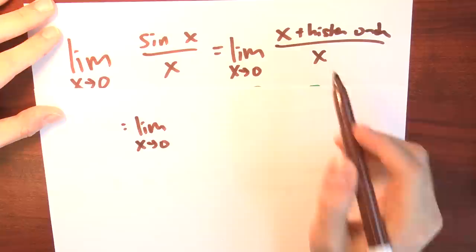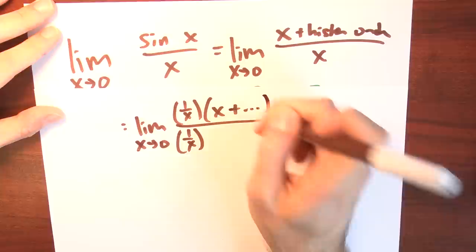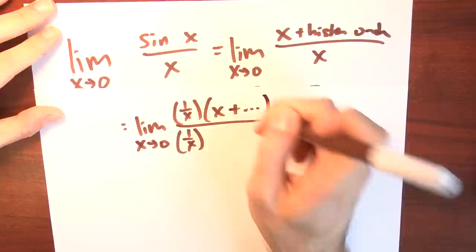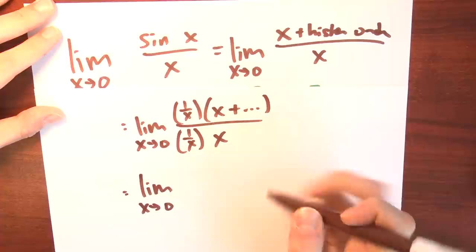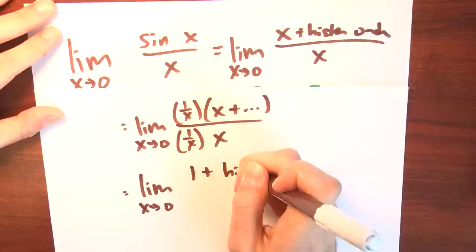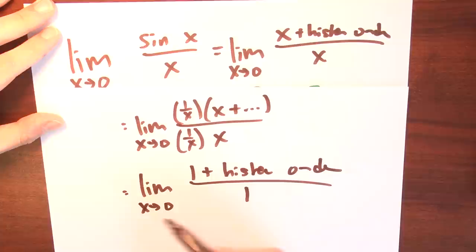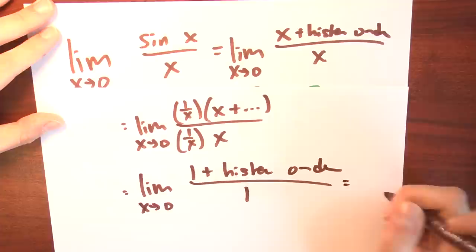What I would probably want to do is multiply the numerator and the denominator by 1 over x. So this looks like the limit as x approaches 0 of: the numerator is now 1 plus these higher order terms, and the denominator is just 1. Taking the limit as x approaches 0, I'd be very tempted to say this limit is just 1.